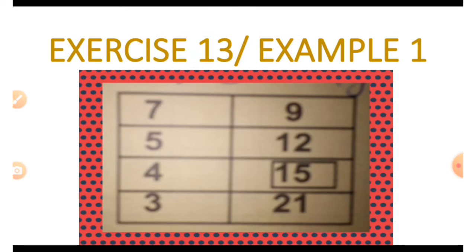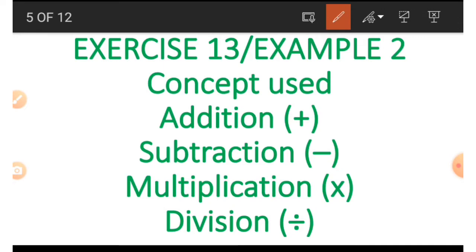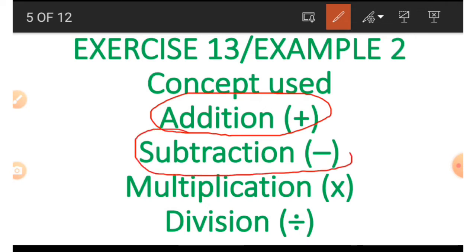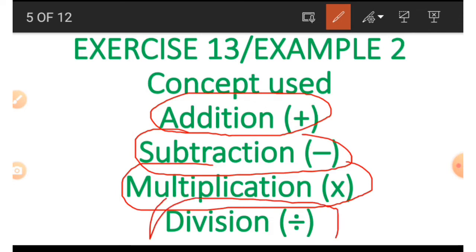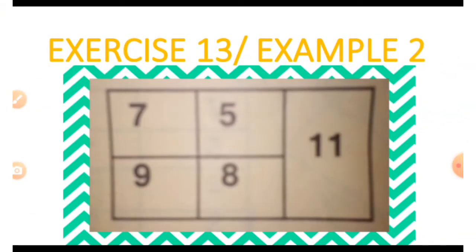Whenever we want to find any of them, we first identify the number connected with it. Now let's look at example 2. We have the concepts of addition, subtraction, multiplication, and division — four concepts in example 2. There are five numbers in this example.